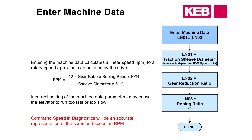We also have an equation you can use if you're wondering whether your motor is rotating at the correct RPM for a given foot-per-minute speed. It's: 12 times the gear ratio times your roping ratio times the speed in feet per minute, divided by the shiv diameter times 3.14. If you don't have a tach, this should tell you pretty closely what your motor should be rotating at for a corresponding foot-per-minute speed.